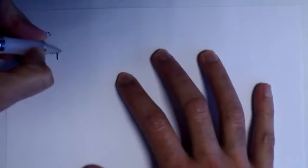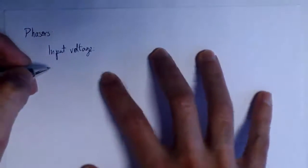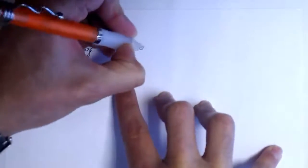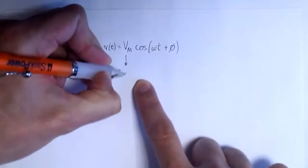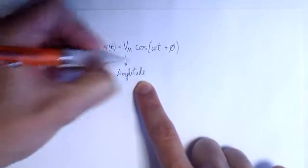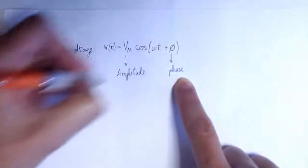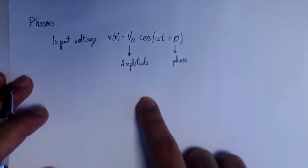In this video we'll talk about phasors. The input voltage of our circuits is not going to be a constant current or a constant voltage. It's going to be an AC input that we can represent as a cosine function with some amplitude Vm, some frequency omega, and some phase phi. This is going to be the input of our circuit, a function that changes with time according to a cosine function.